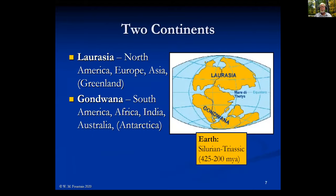What is the reason for that? You have to go back in geologic history and look at what the earth looked like between 425 million and 200 million years ago. We were on a supercontinent called Laurasia - named from the St. Lawrence Seaway and Asia - made up of North America, Europe, Asia, and Greenland. The other supercontinent was Gondwana, named from a province in India, made up of South America, Africa, India, Australia, and Antarctica.